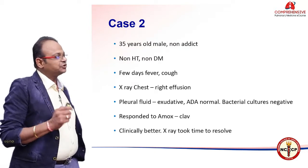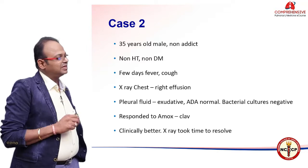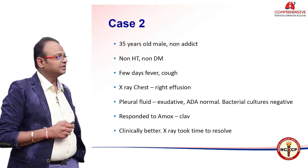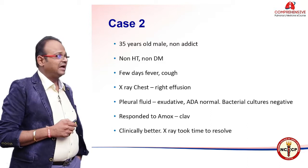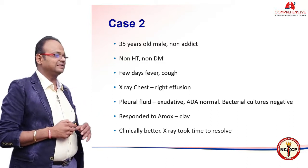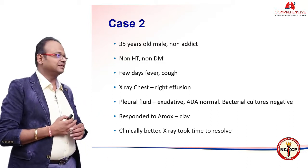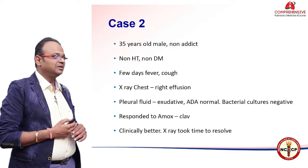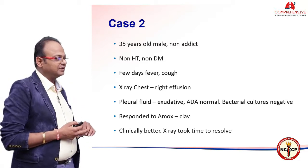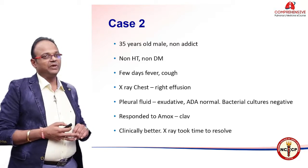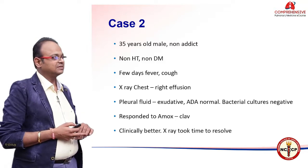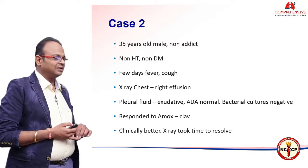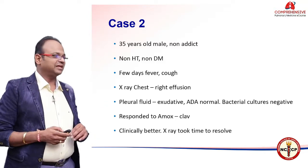Case 2: a 35-year-old male patient, non-addict, non-hypertensive, non-diabetic, with a few days of fever and cough. X-ray again showed right-sided pleural effusion — exudative, ADA normal, bacterial cultures negative. He responded well to first-line antibiotics, likely amoxicillin-clavulanic acid, became clinically better, though the X-ray took some time to resolve.